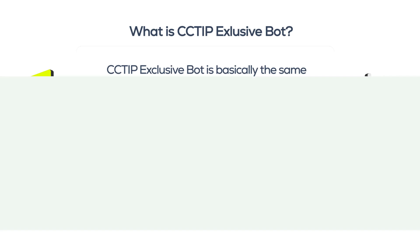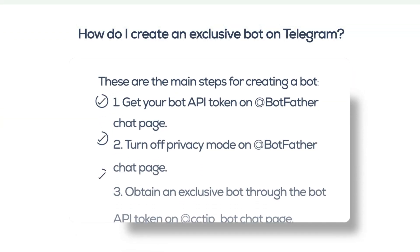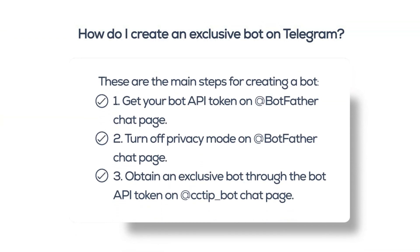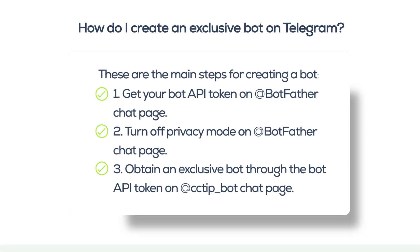How do I create an Exclusive Bot on Telegram? These are the main steps for creating a bot. 1. Get your bot API token on the @BotFather chat page. 2. Turn off privacy mode on the @BotFather chat page. 3. Obtain an Exclusive Bot through the bot API token on the @CCTip_bot chat page.